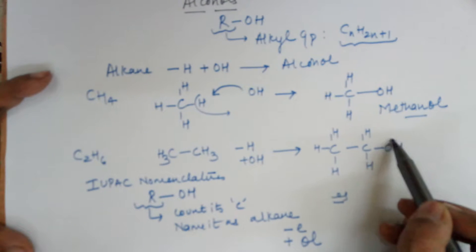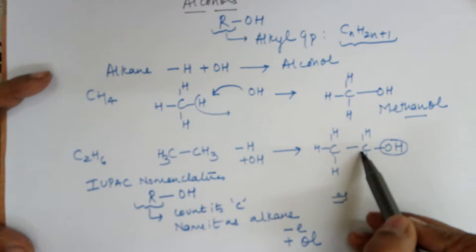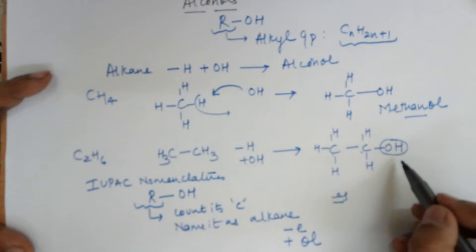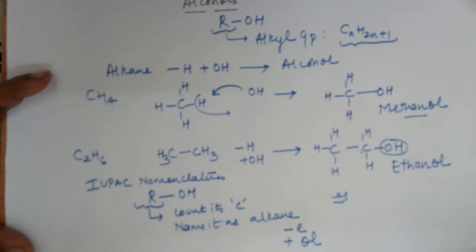The second one: you have two carbons and the OH should be attached to one of them, so that's two carbons which is ethane. Remove the E, add 'ol', that's ethanol.